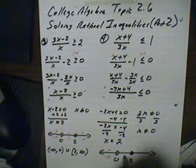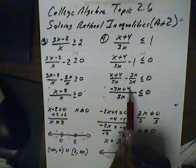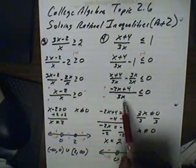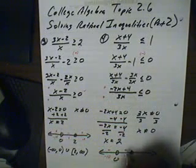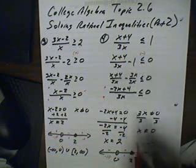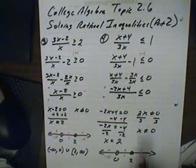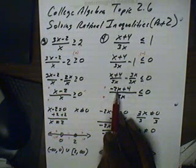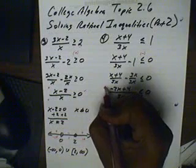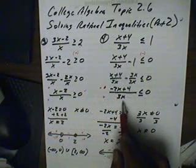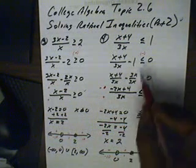Next, a number between 0 and 2 — let's try x = 1. We have −2 × 1 = −2, plus 4, which is positive 2. And 3 × 1 = 3, which is positive. Positive divided by positive is positive, so we can't use this area. Now, beyond 2 — let's try x = 10. We have −2 × 10 = −20, plus 4 = −16, which is negative. And 3 × 10 = 30, which is positive. Negative divided by positive is negative, so this area is what we're looking for.